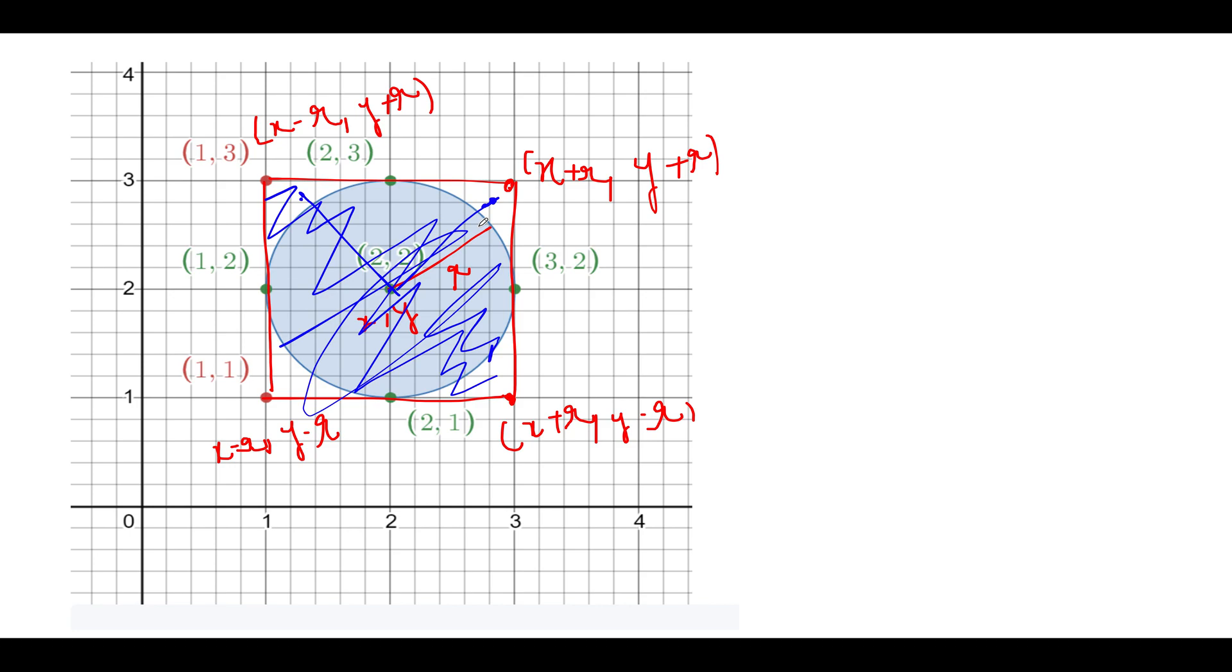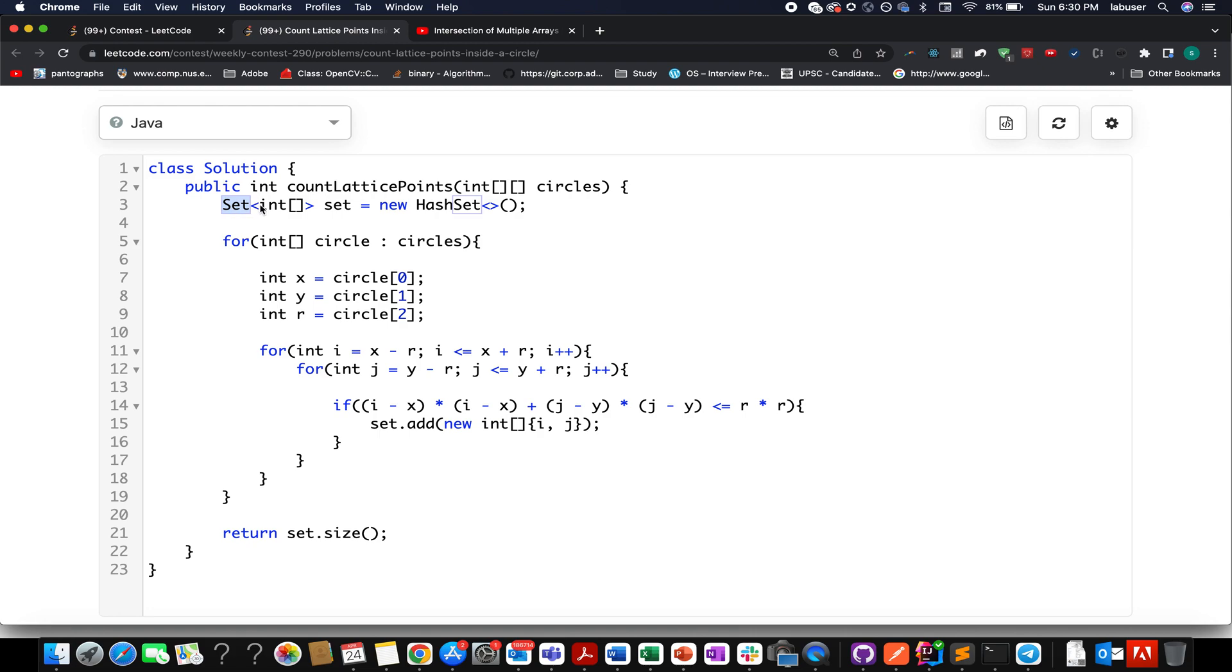Here I have created a set - I will talk about why it is being used. Let's focus on the iteration. I iterate over all the circles, extract the x center coordinate, y center coordinate, and radius. Then I identify all the integer coordinates that lie in that rectangle zone. The x coordinate starts from x minus r and goes up till x plus r. The y coordinate starts from y minus r and goes up till y plus r.